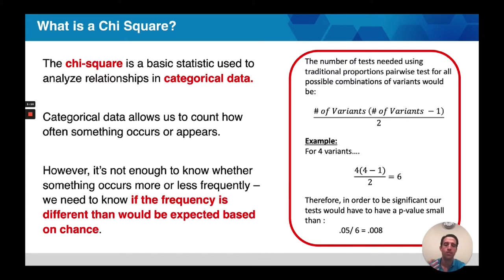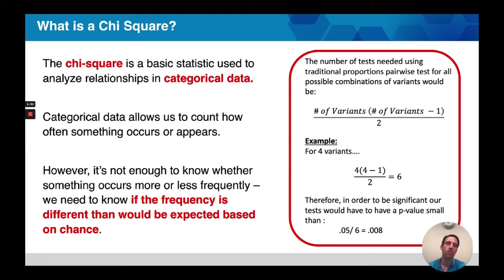You can use as many categories as you like, albeit it becomes harder to achieve significance. When we think about this in relationship to a traditional proportions test, where we are looking at multiple variants compared to a control, we have to conduct multiple pairwise comparisons. The number of variants times the number of variants minus 1, divided by 2, is the formula that tells us how many comparisons we need to make.